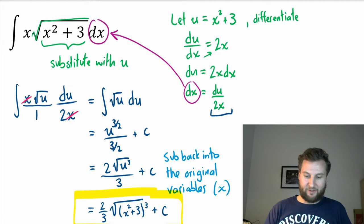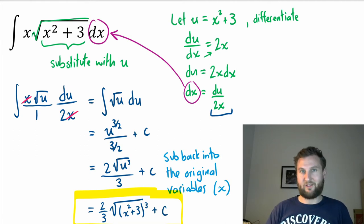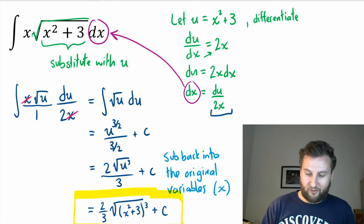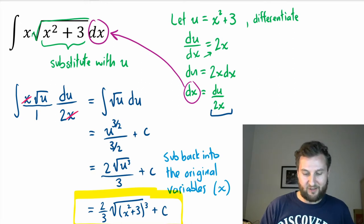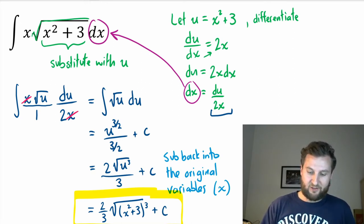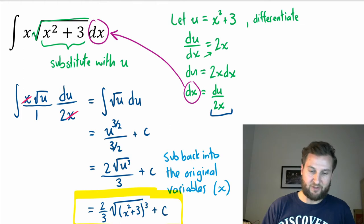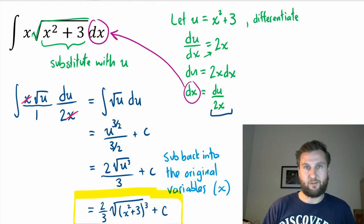If we look back and tried to work this out using what we know about standard integrals, it would have been quite difficult to arrive at that 2/3 coefficient and the exponent of 3/2 — or a square root of something cubed. That might have been a little tricky, so substitution gets us there more efficiently.